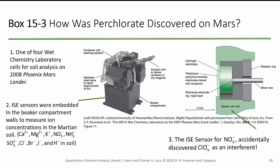How was perchlorate discovered on Mars using ion selective electrodes? One of four wet chemistry labs on the Phoenix Lander embedded ion selective electrodes in the beaker compartment walls to measure ion concentrations. They looked at calcium, magnesium, potassium, nitrate, ammonium, sulfate, chloride, bromide, iodide, and H⁺. In the beaker cell wall, they basically sucked up some soil, added water to it, and asked: what's in here?